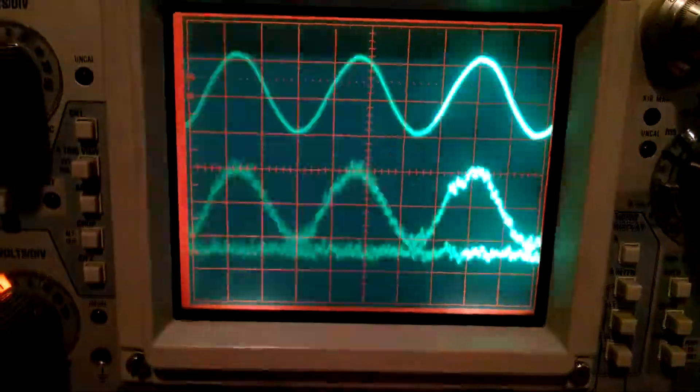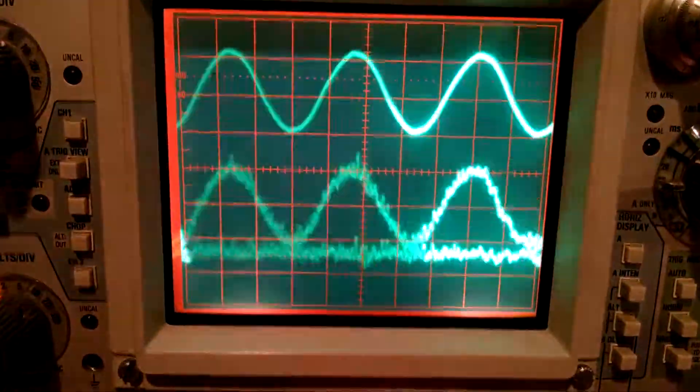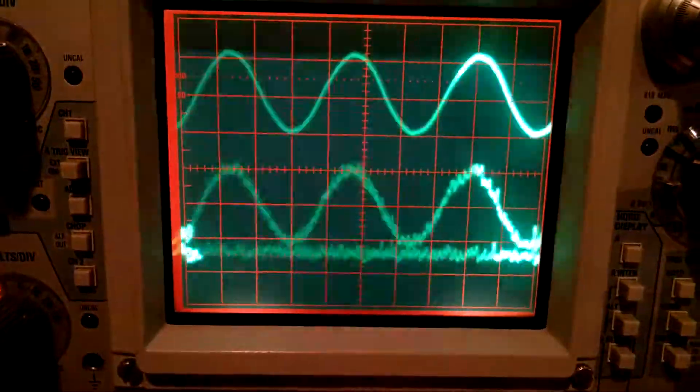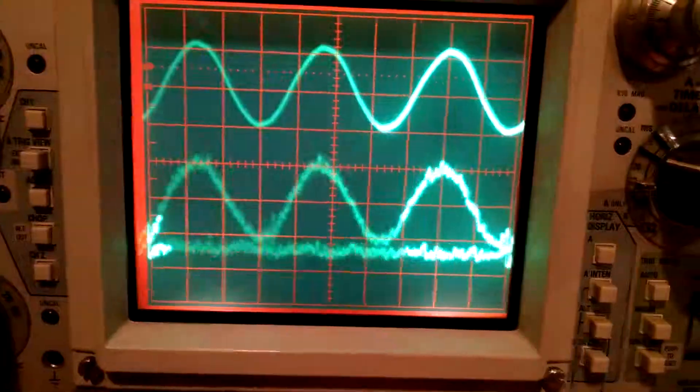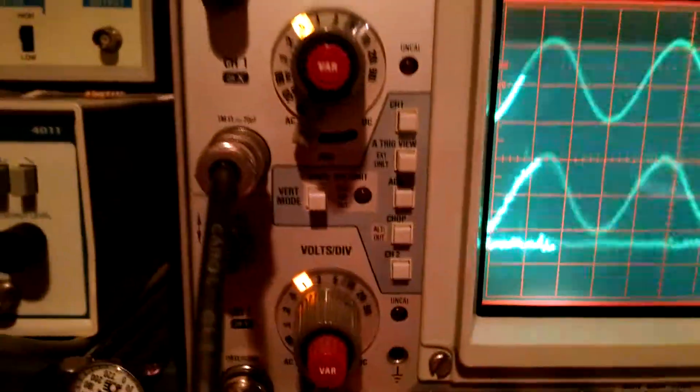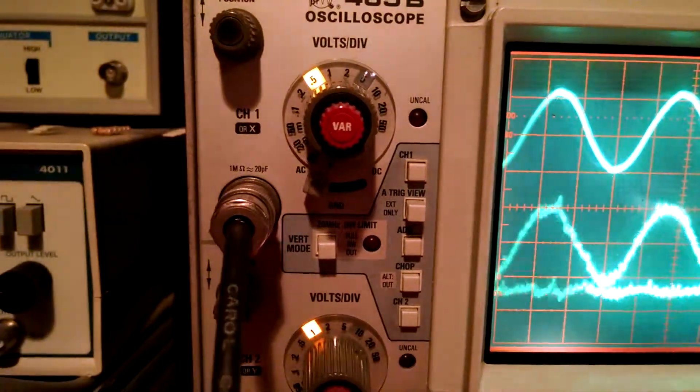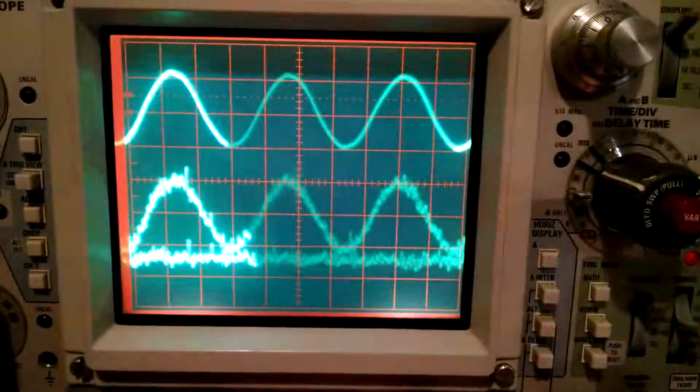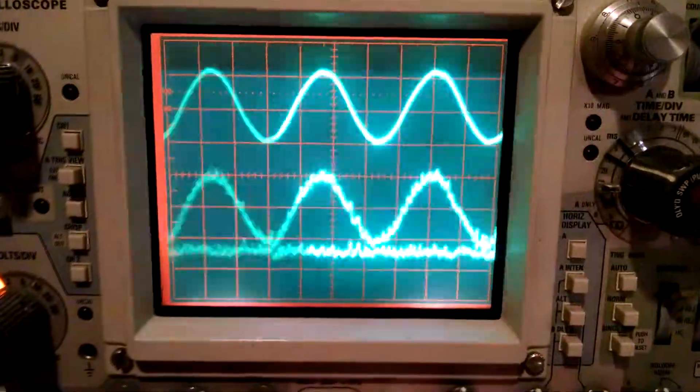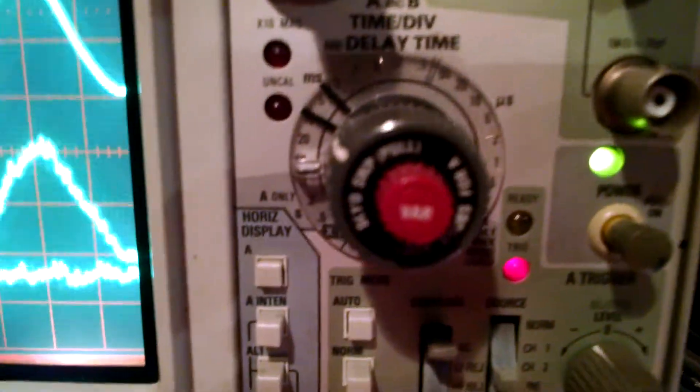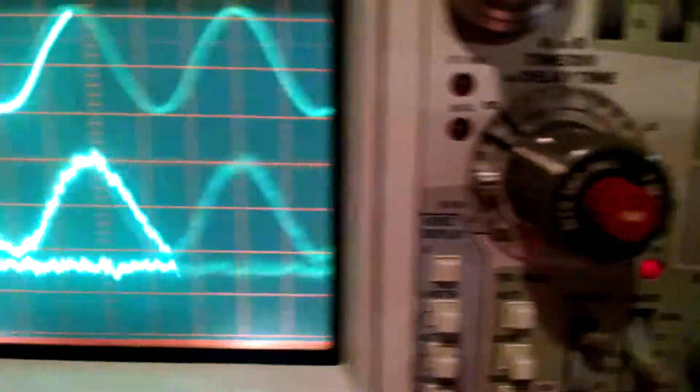The trace in the middle is the additive of the two traces together. Scale is 0.5 volts per division for channel 1 and 1 volt per division for channel 2. The time scale is 5 milliseconds per division.